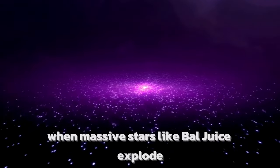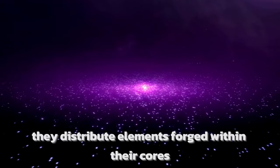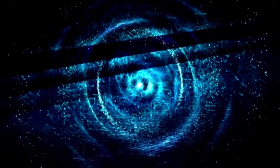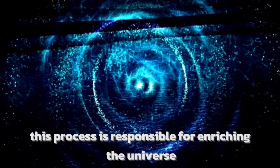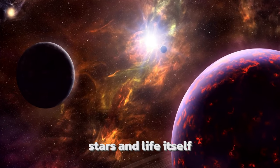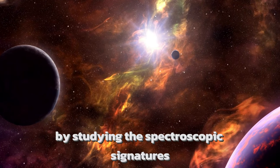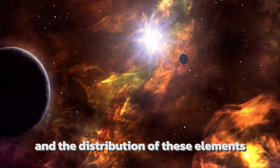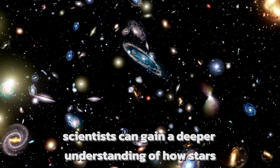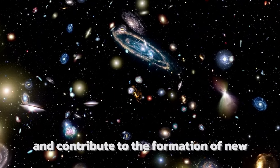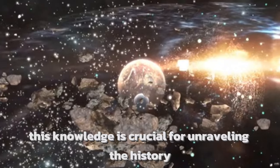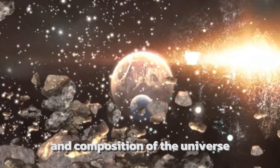When massive stars like Betelgeuse explode, they distribute elements forged within their cores, including heavy elements like iron, into space. This process is responsible for enriching the universe with the building blocks of planets, stars, and life itself. By studying the spectroscopic signatures and the distribution of these elements in the aftermath of a supernova, scientists can gain a deeper understanding of how stars evolve, fuse elements, and contribute to the formation of new celestial bodies. This knowledge is crucial for unraveling the history and composition of the universe.